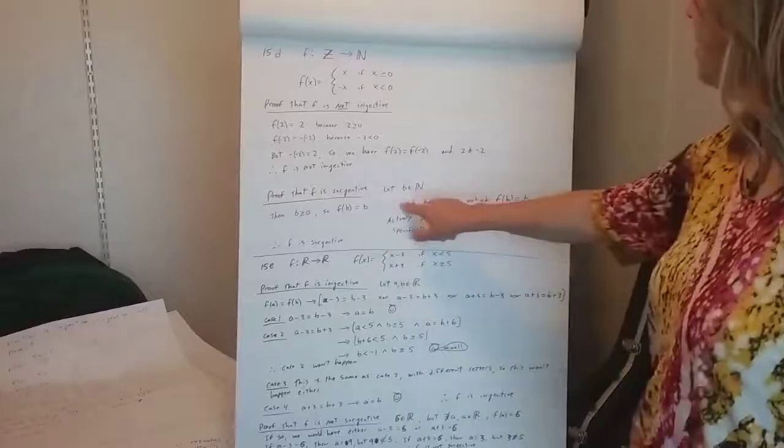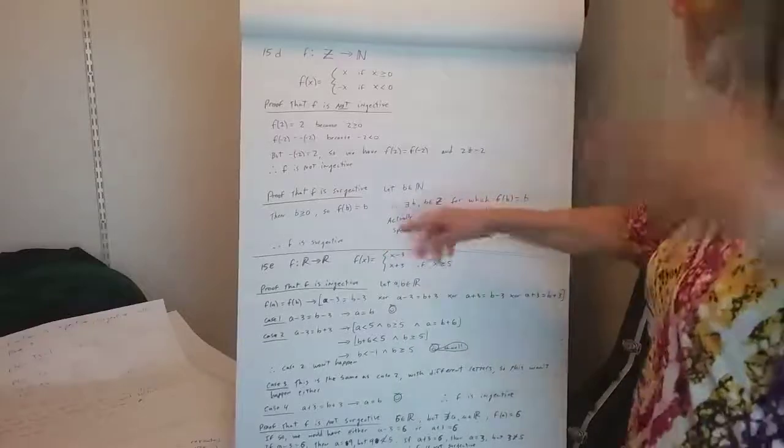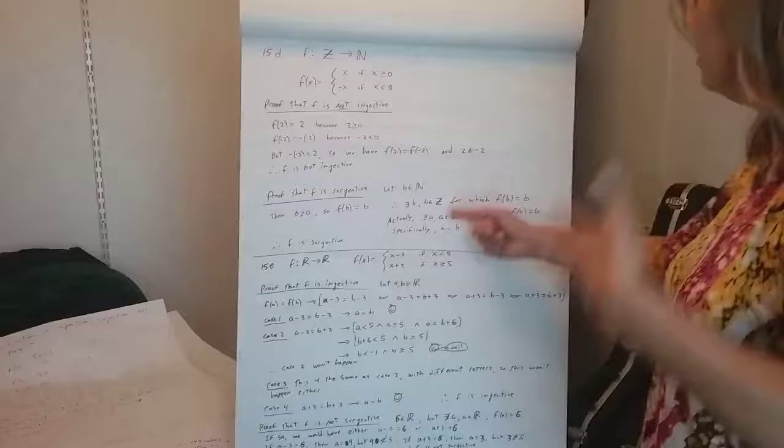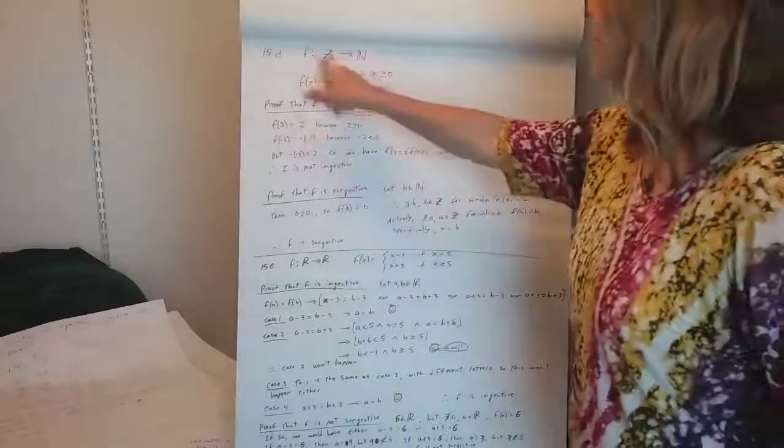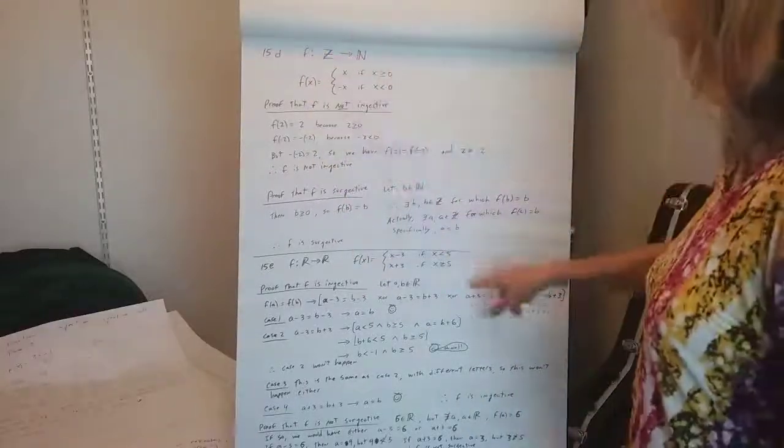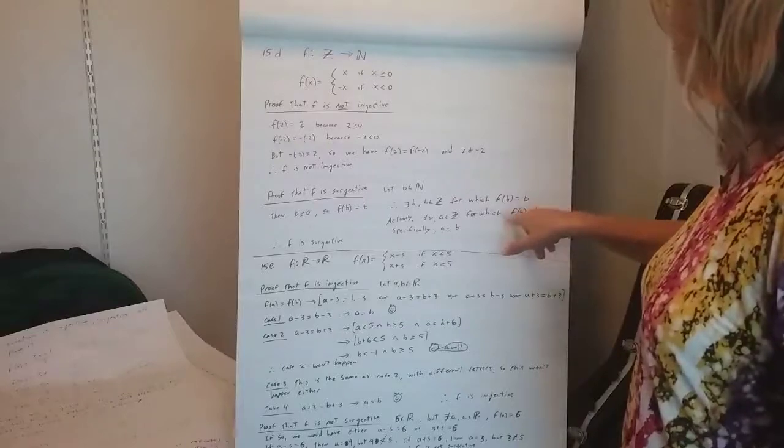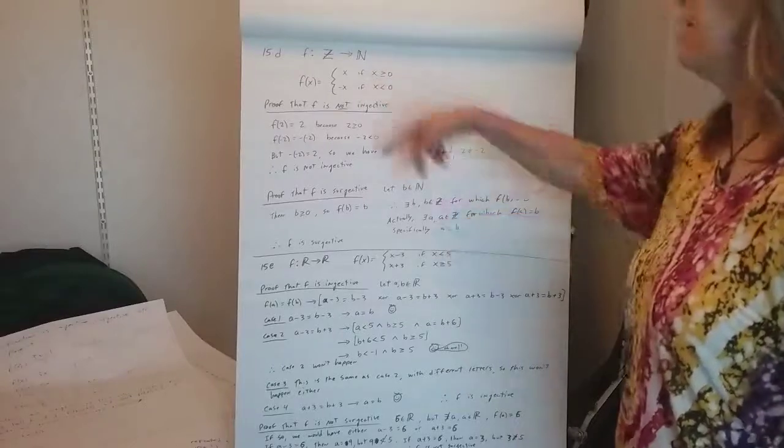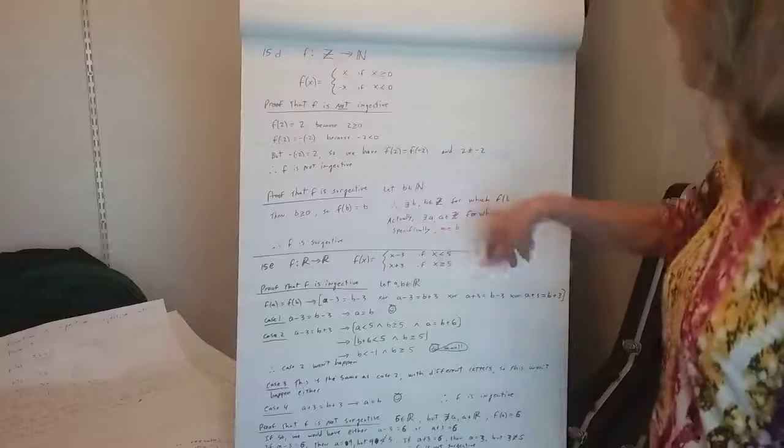So there you go. Sorry, so I said that there exists b in B for which f of b equals b, really, I mean, there exists something in Z, in the domain, that gets sent to b, but b and the thing that gets sent to b are the same thing, so, yeah.